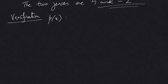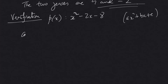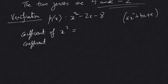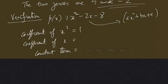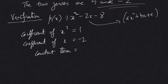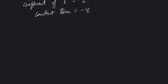Now for the verification part, let's write the polynomial again: x² - 2x - 8. Comparing with the standard form ax² + bx + c, we identify: coefficient of x² (a) = 1, coefficient of x (b) = -2, and constant term (c) = -8. Remember that our model uses plus signs, so the signs of coefficients must be noted carefully.